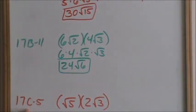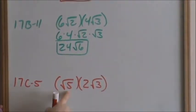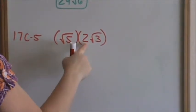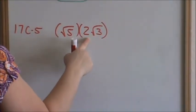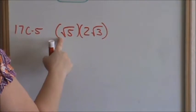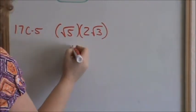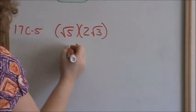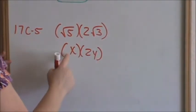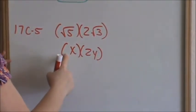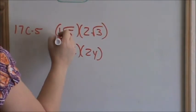Now on to problem 17c, number 5, square root of 5. Remember these are coefficients in front of the radicals. What coefficient is in front of square root of 5? This is not anything different than saying x times 2y. What coefficient is in front of this x? Yep, 1.